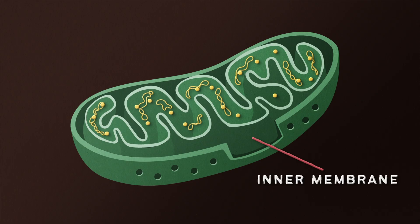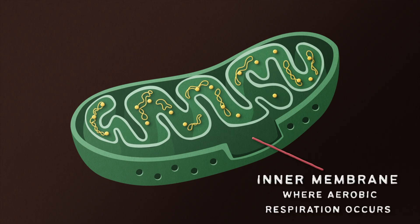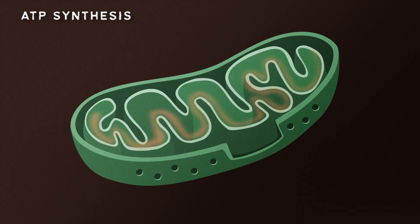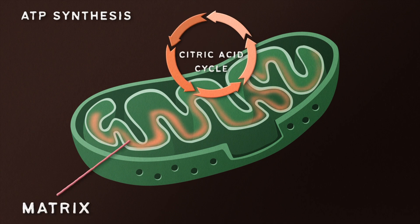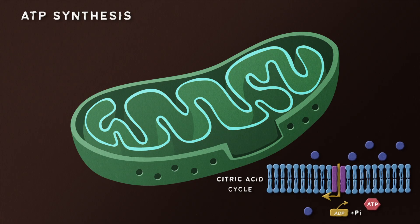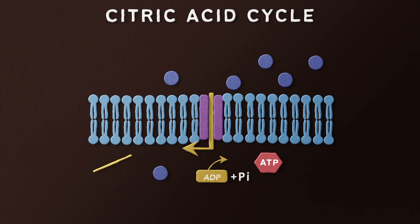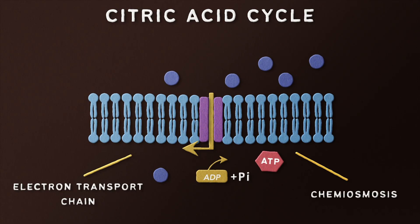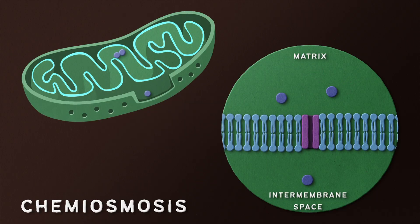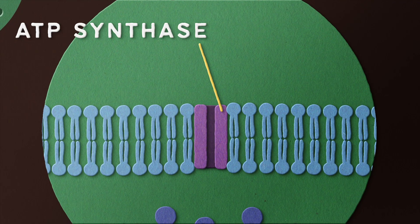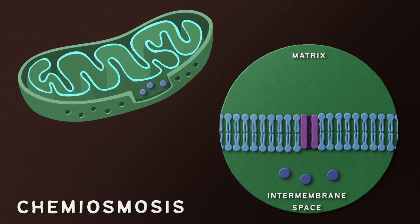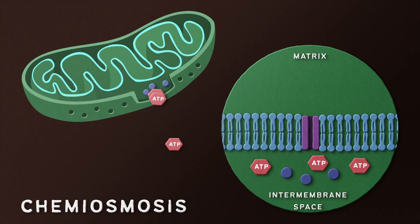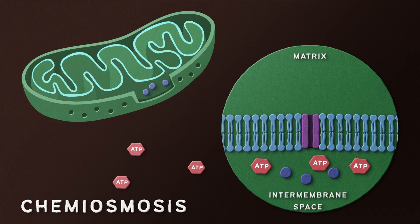As you might have picked up on, the inner membrane is where all the magic happens — the magic being aerobic respiration, of course. This is the location of ATP synthesis, which begins with the citric acid cycle in the matrix and culminates in oxidative phosphorylation in the inner membrane. The latter further consists of two parts: the electron transport chain and chemiosmosis. Chemiosmosis involves the movement of protons across the inner membrane from the matrix to the intermembrane space through an enzyme called ATP synthase, which uses the electrochemical gradient to drive the production of ATP. The ATP generated is then deployed into the cytoplasm, providing energy for crucial processes throughout the cell.